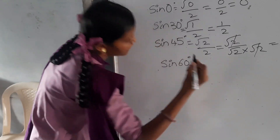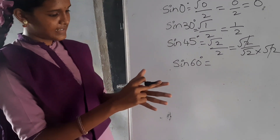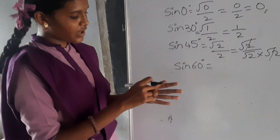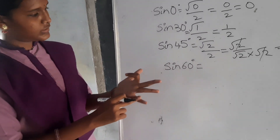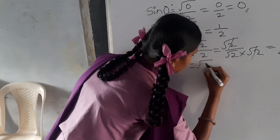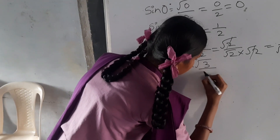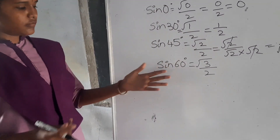Let us find the value of sin 60. We have assumed that the index finger has 60 degrees. The number of fingers below are 1, 2, 3. So root of 3 by 2. Therefore sin 60 is equals to root 3 by 2.